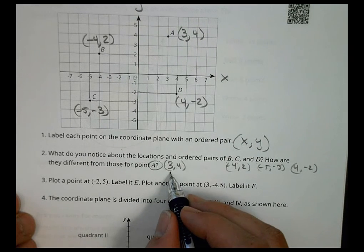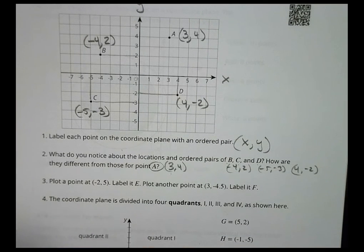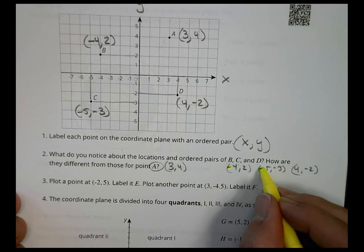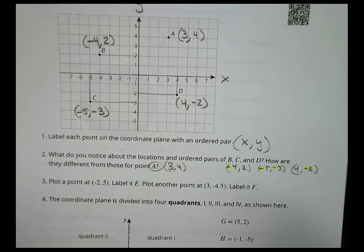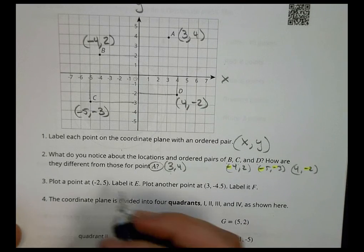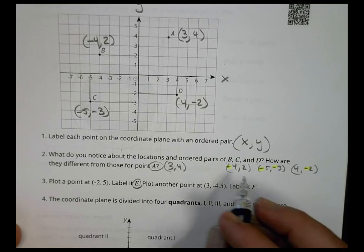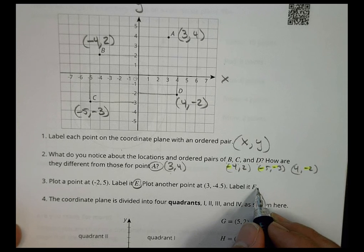Hopefully, the thing you're noticing is that B and C and D all have at least one negative number in the ordered pair, whereas A are two positive numbers. Plot the point negative 2, 5 and label it point E. And then plot another point, 3, negative 4.5 and label it F.